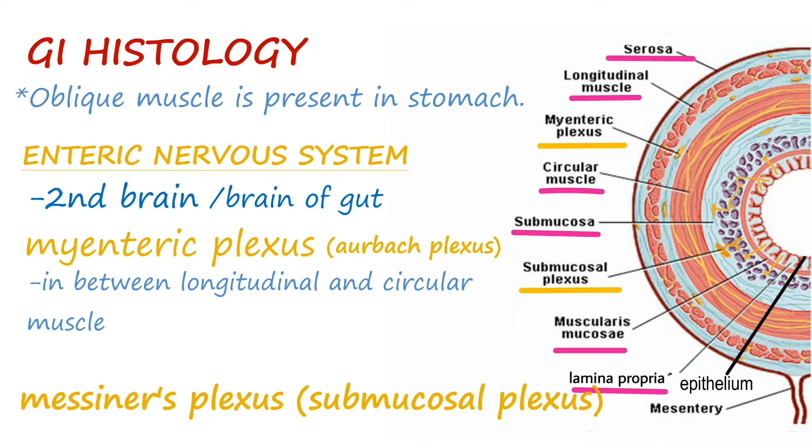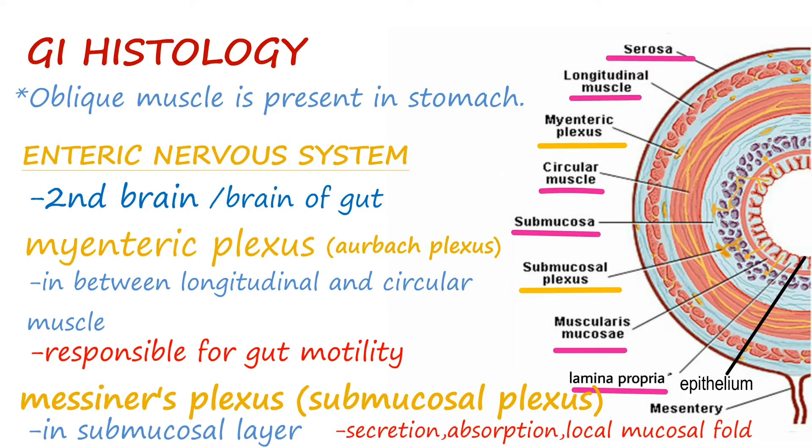lies, as the name suggests, in the submucosal layer. This myenteric plexus lying between the muscle is responsible for gut motility, whereas Meissner's plexus lying in the submucosal layer is responsible for secretion, absorption, and local mucosal folds.